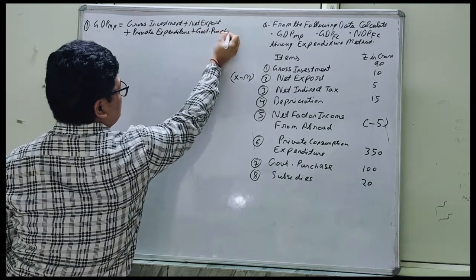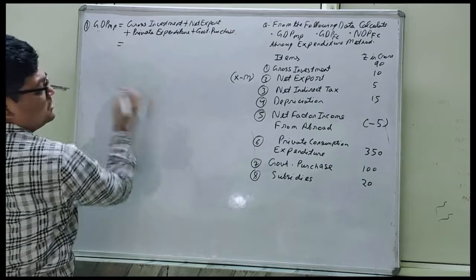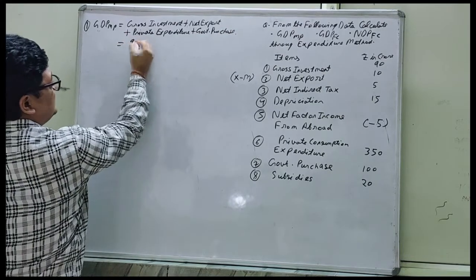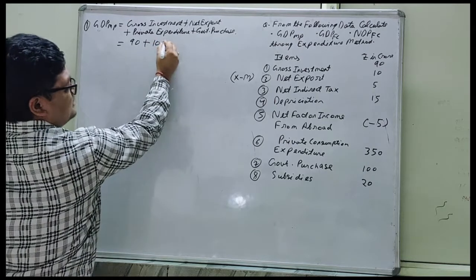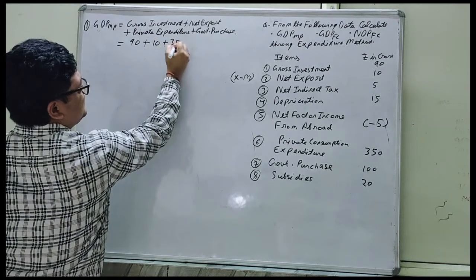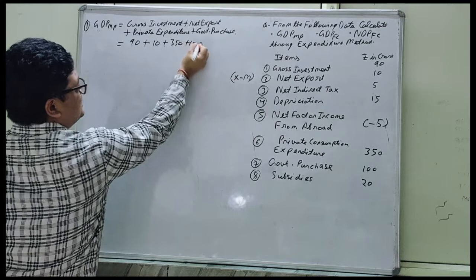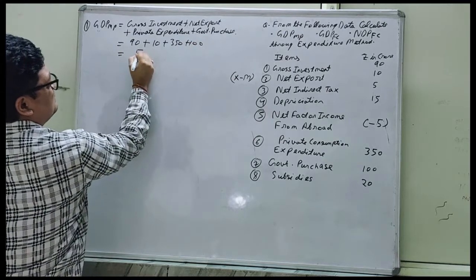It is also an expenditure. So we are having 90 plus 10 plus 350 plus 100, it will become 550.